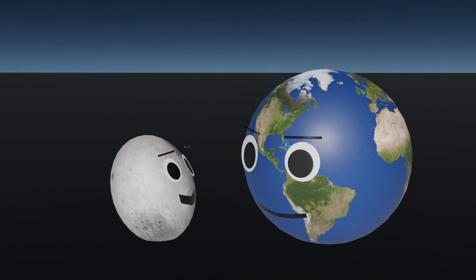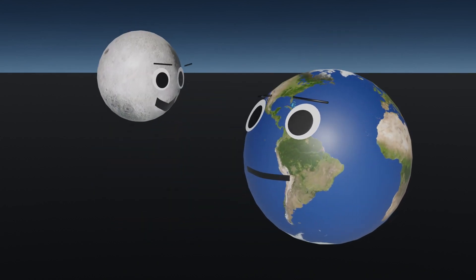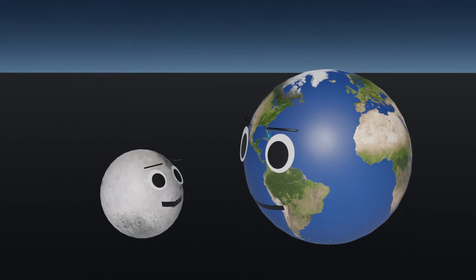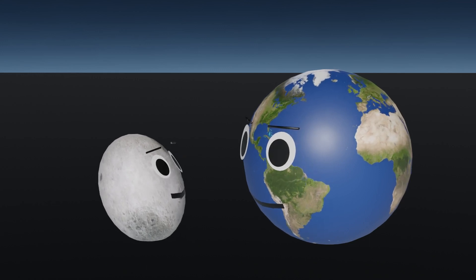If Earth were the size of a nickel, Jupiter would be about as big as a basketball. In fact, Jupiter is twice as massive as all the other planets combined.